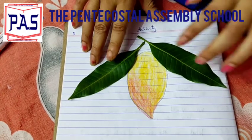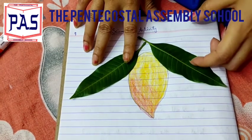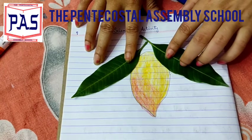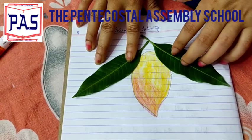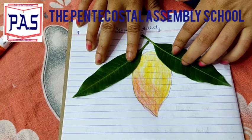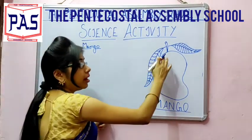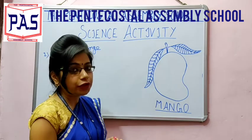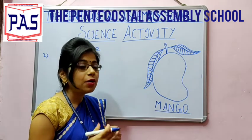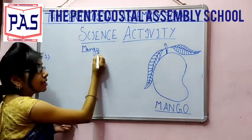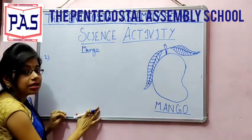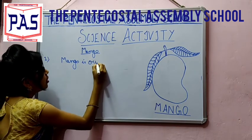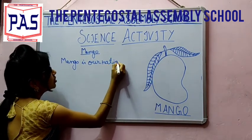Now I am going to tell you five lines about mangoes that you will write in your EBS copy after doing this activity. Write 'Mango' as the heading, and then write five lines. The first line: 'Mango is our national fruit.' The second line: 'It is called the king of all fruits.'